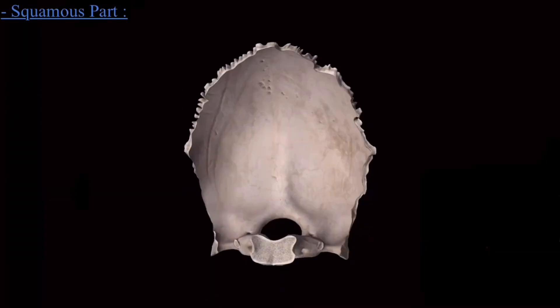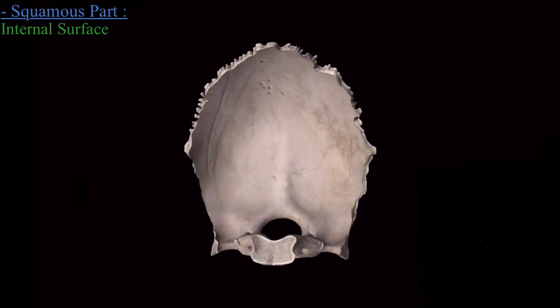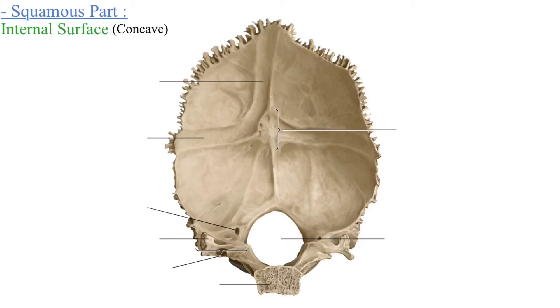Now we come to the internal surface of the squamous part. The internal surface is concave in nature. Just like the external surface, the internal surface also has a protuberance called the internal occipital protuberance.